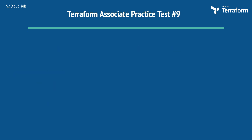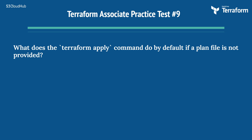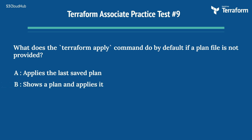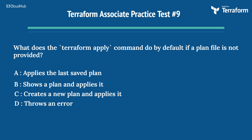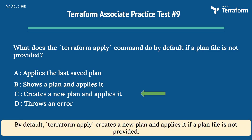The ninth question: what does the Terraform apply command do by default if a plan file is not provided? Options are: A) applies the last saved plan, B) shows a plan and applies it, C) creates a new plan and applies it, D) throws an error. The right answer is Option C, creates a new plan and applies it. By default, Terraform apply creates a new plan and applies it if a plan file is not provided.